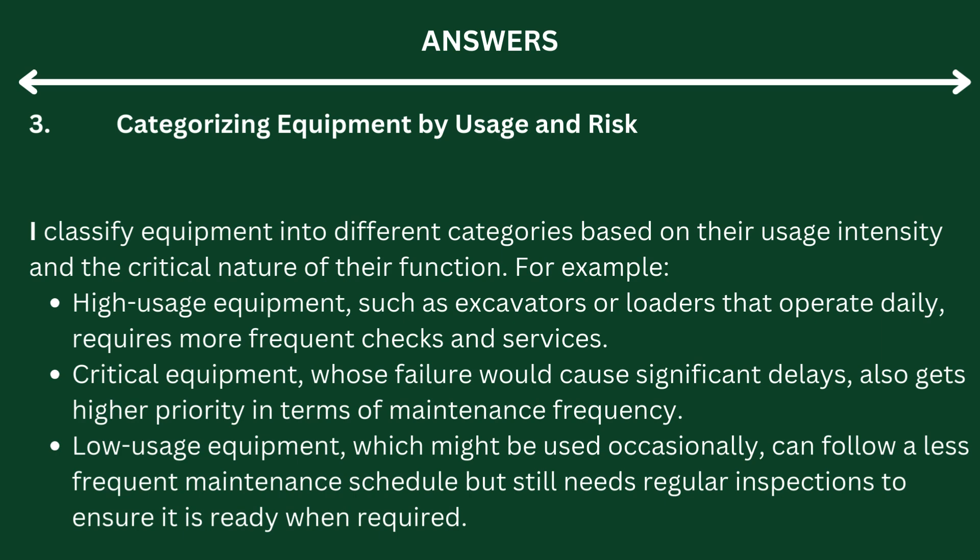Step 3: Categorizing Equipment by Usage and Risk. I classify equipment into different categories based on their usage intensity and the critical nature of their function. High-usage equipment, such as excavators or loaders that operate daily, requires more frequent checks and services. Critical equipment whose failure would cause significant delays also gets higher priority. Low-usage equipment can follow a less frequent maintenance schedule but still needs regular inspections to ensure it is ready when required.